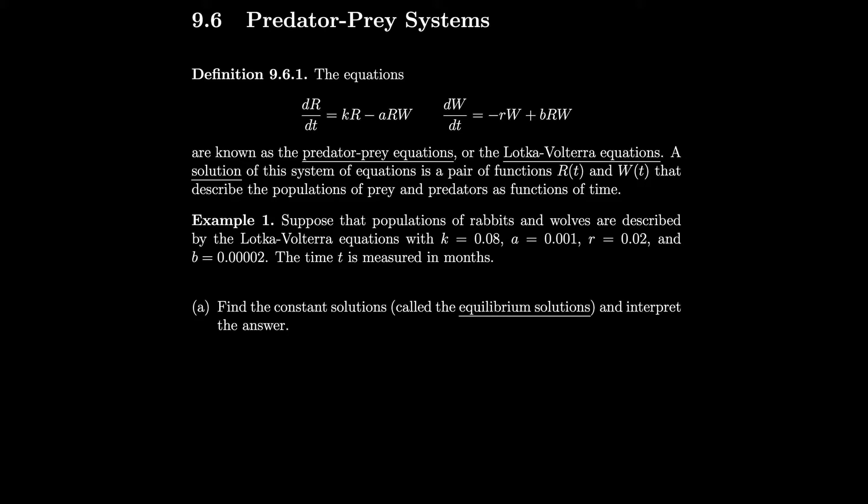Suppose that the population of rabbits and wolves are described by the Lotka-Volterra equations with all of these values for k, a, r, and b, and the time t is measured in months. Let's find the constant solutions, which are called the equilibrium solutions, and interpret the answer.